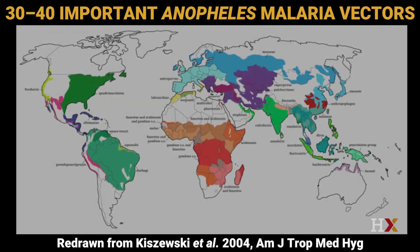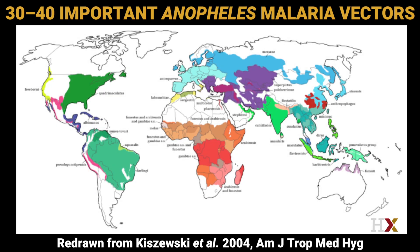Malaria is transmitted to humans exclusively by mosquitoes of the Anopheles genus. There are about 500 Anopheles species in the world. However, only 30 to 40 are considered important vectors of human malaria. These species are spread throughout the globe, as seen here in this slide, and they have very different behaviors during larval and adult stages.